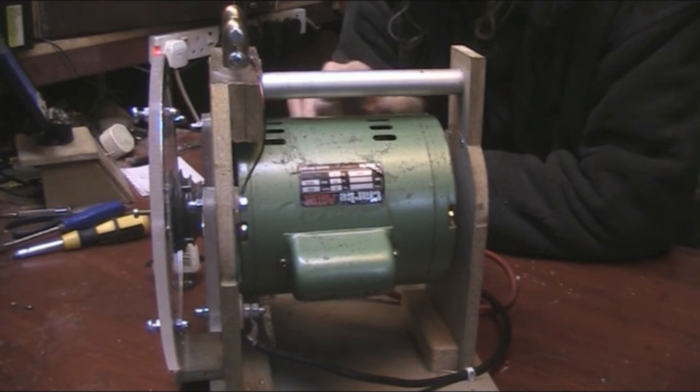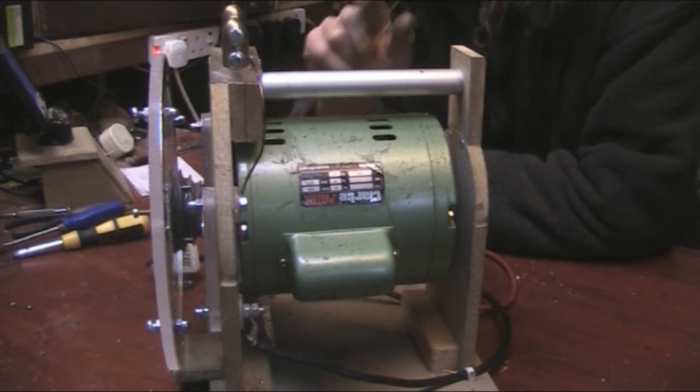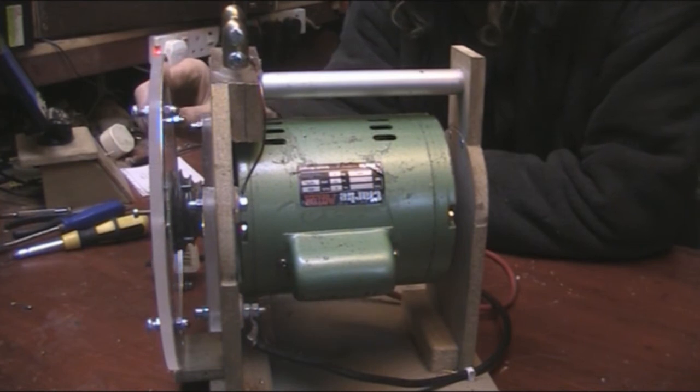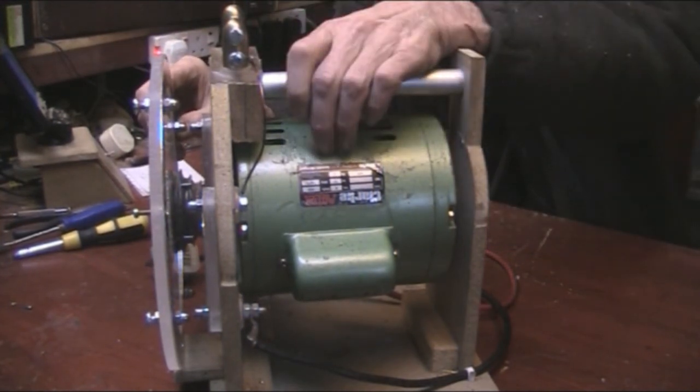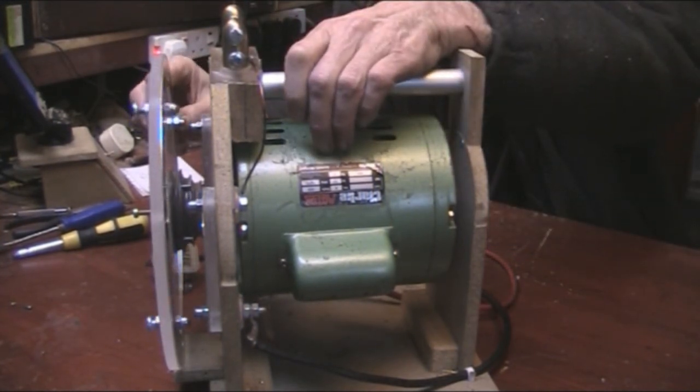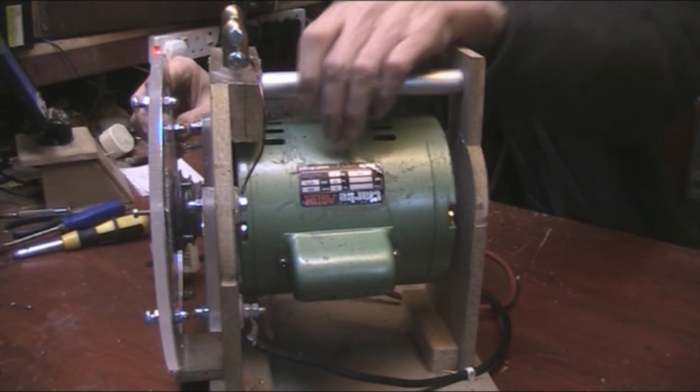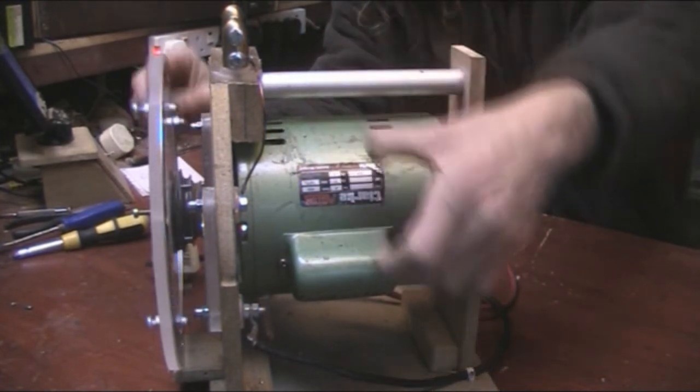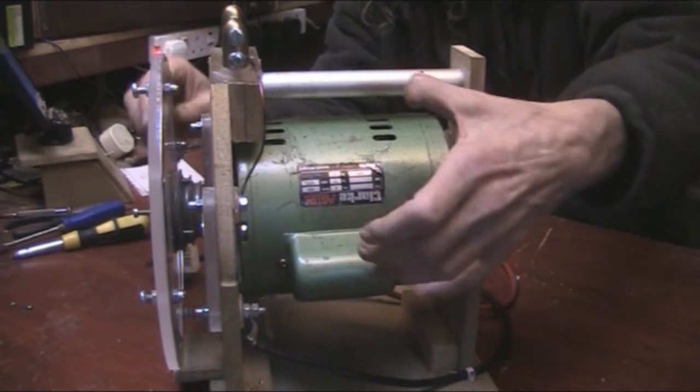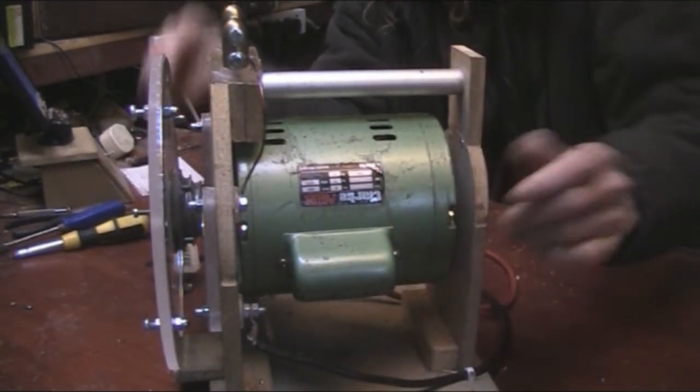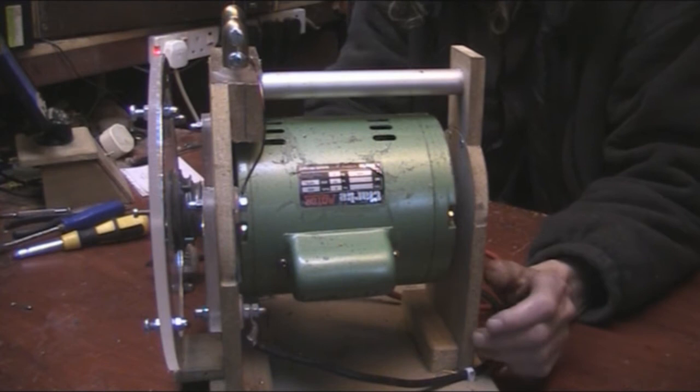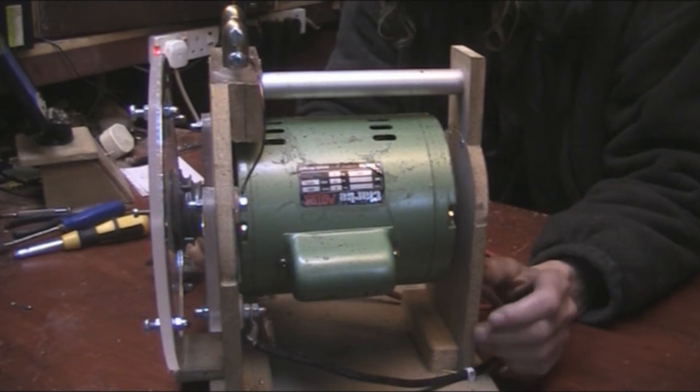That gives you four what they call salient poles, which means that when a coil is energized it pulls it round to that coil, and then the next coil energizes and it pulls it round to the next coil point. It's supposed to synchronize with the mains, which seems to work quite well.